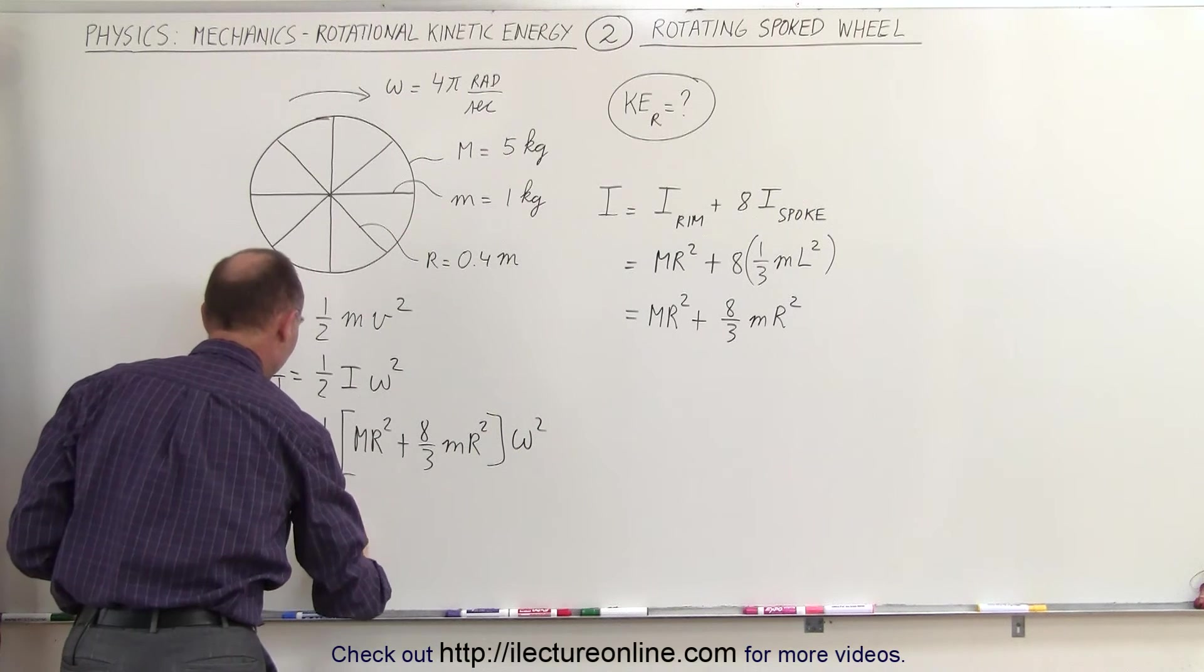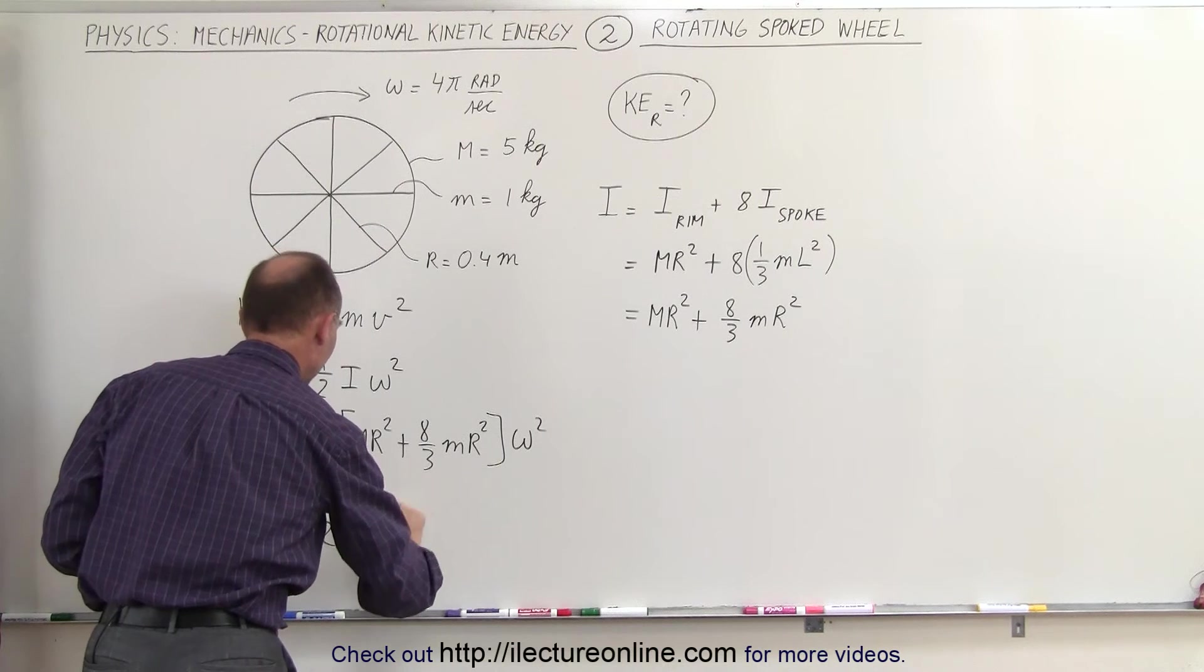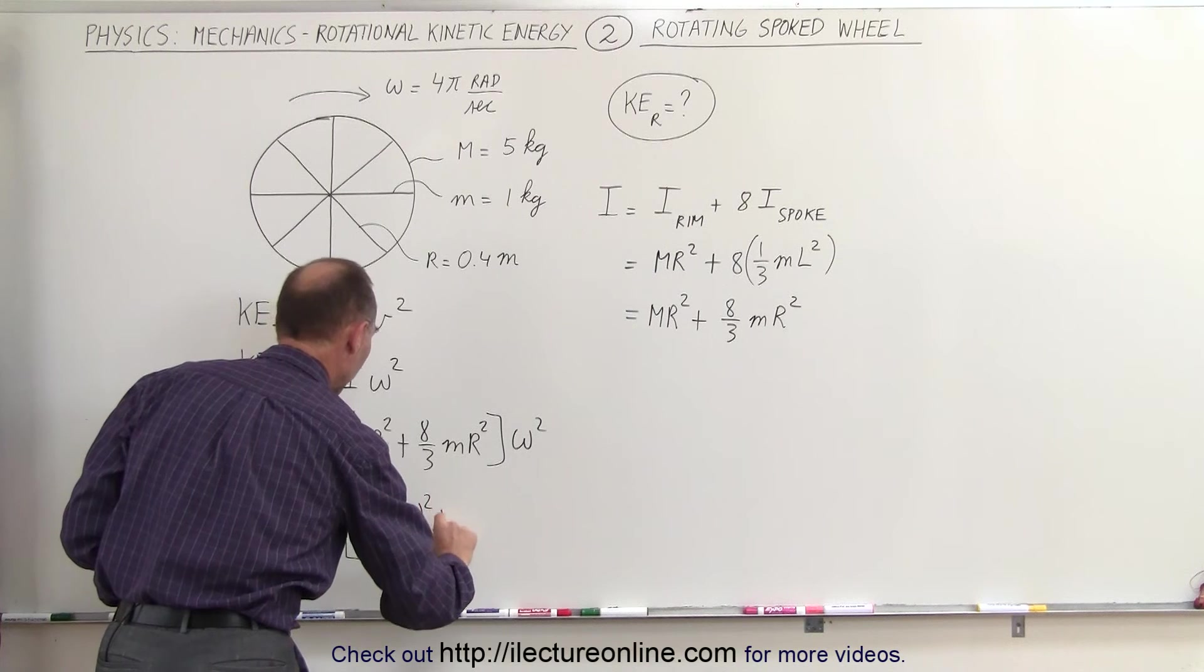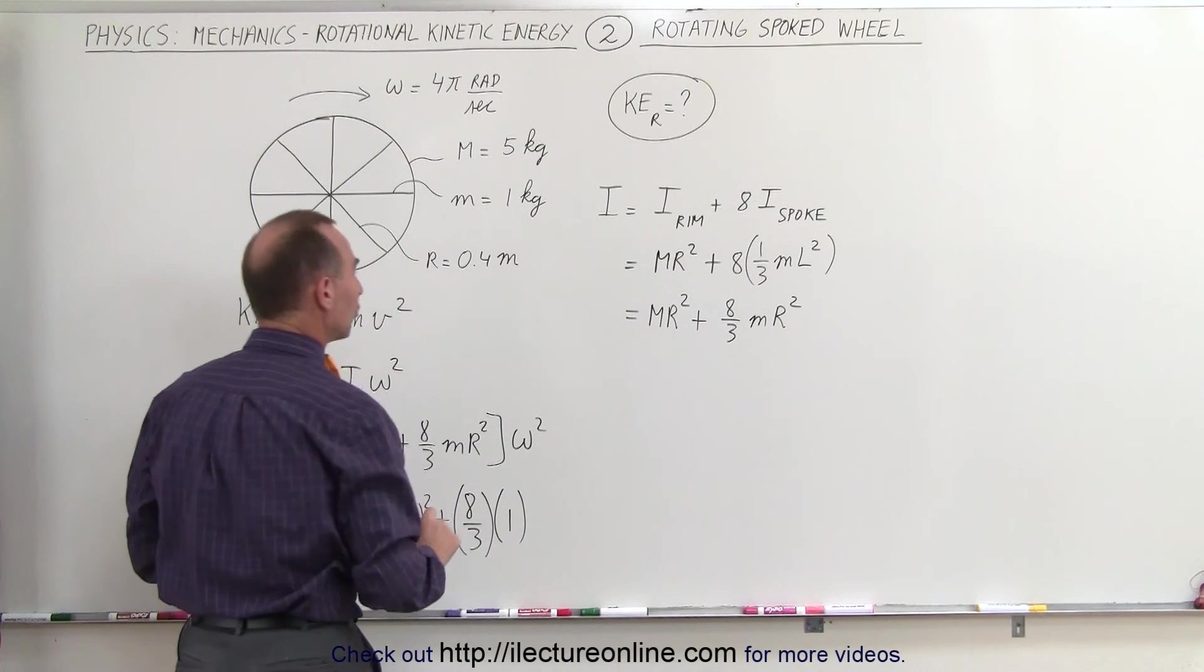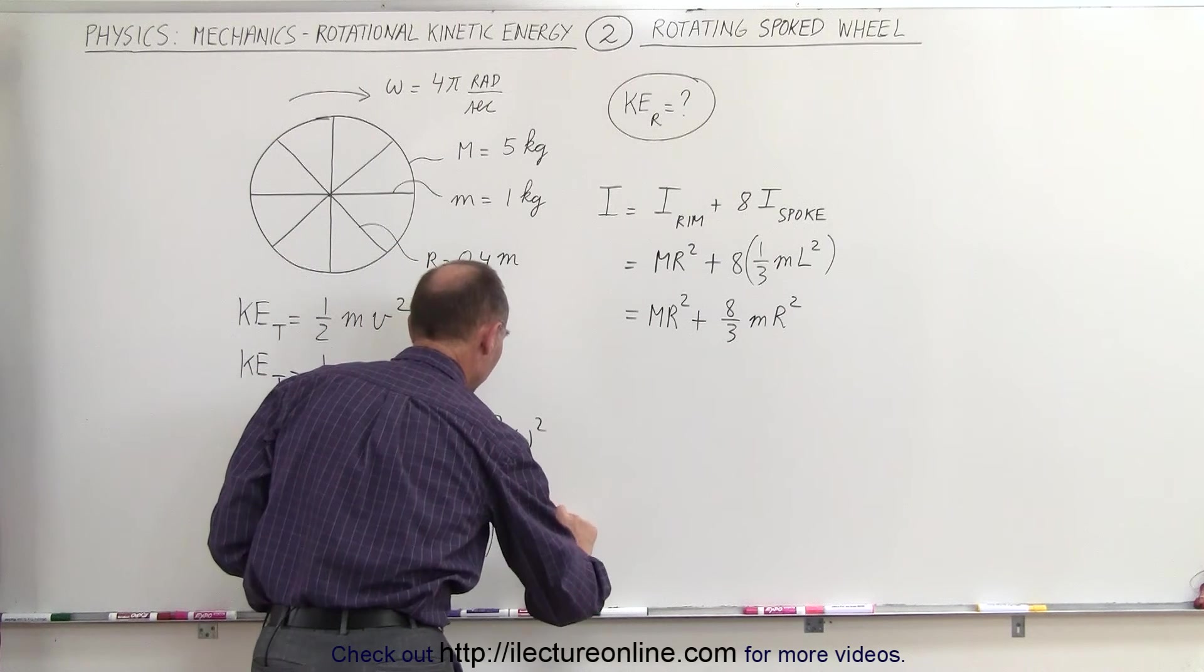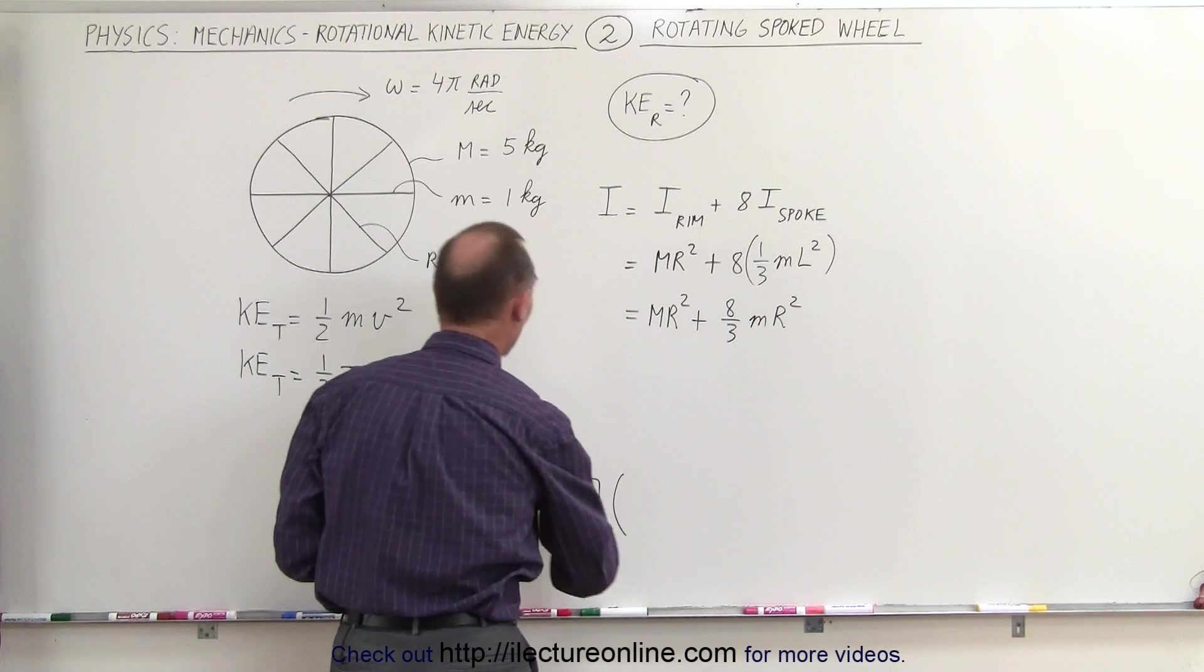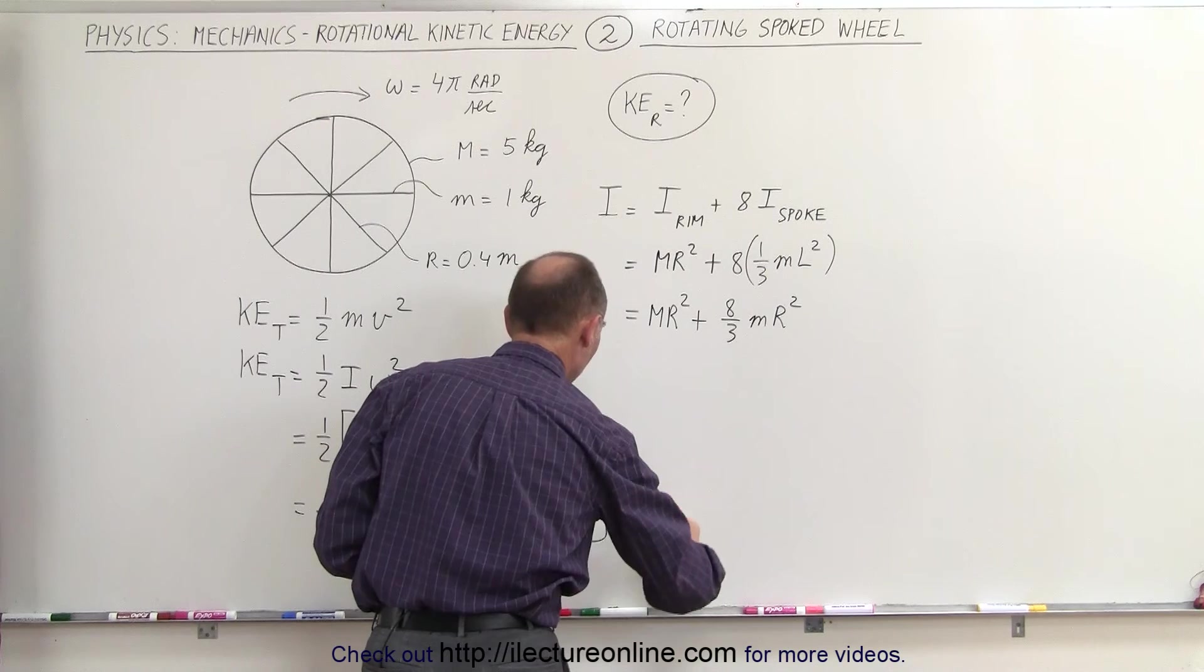This is equal to 1/2 times, that would be 5 times r, which is 0.4 squared, plus 8/3 times 1 kg per spoke times 0.4 squared, and then we multiply that times omega squared. Omega is 4π, so 4π quantity squared.